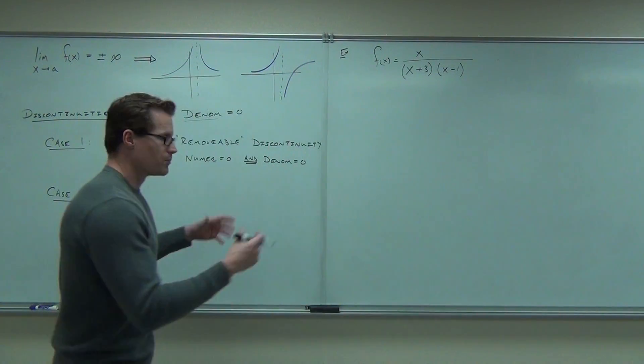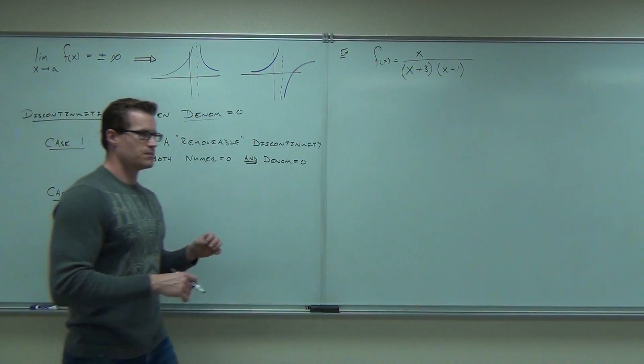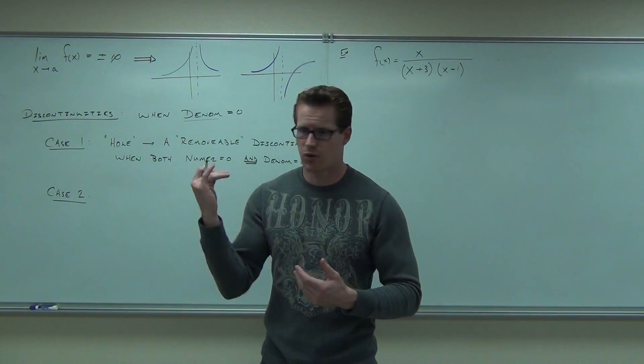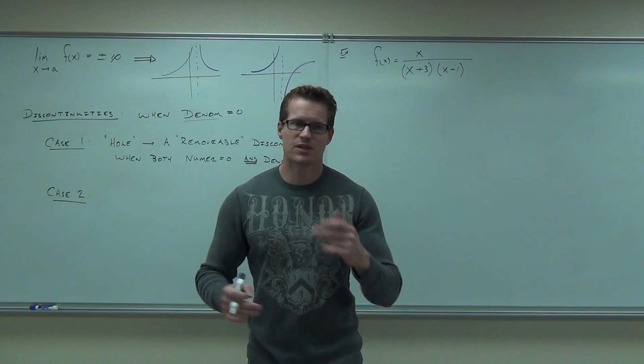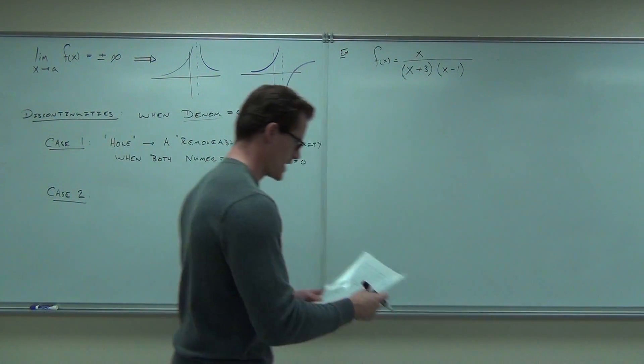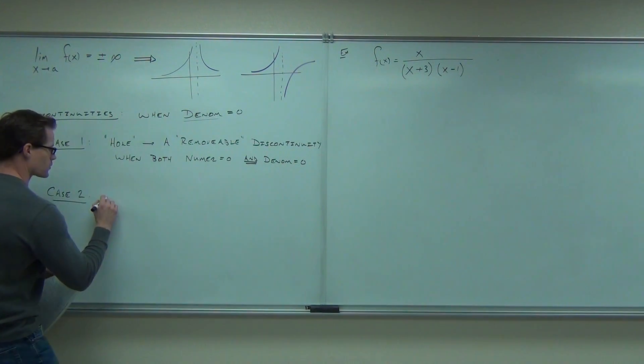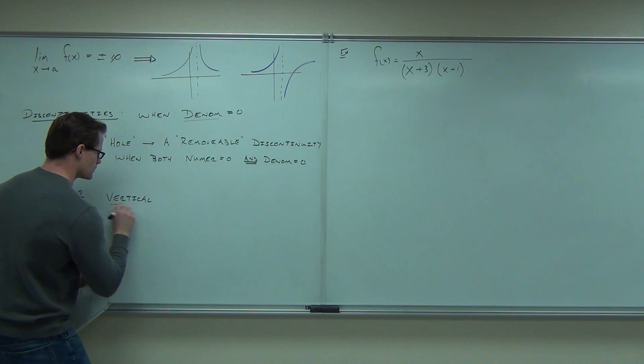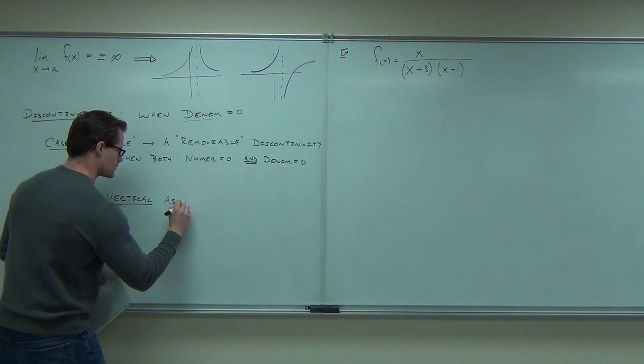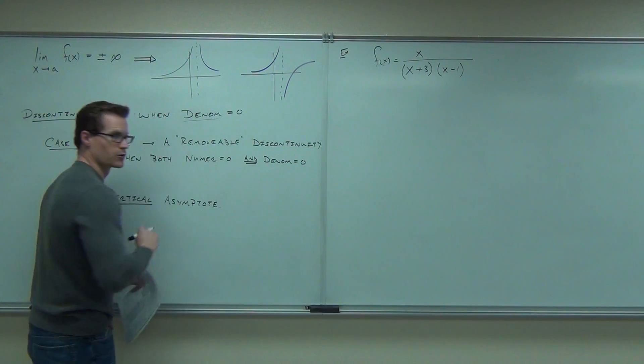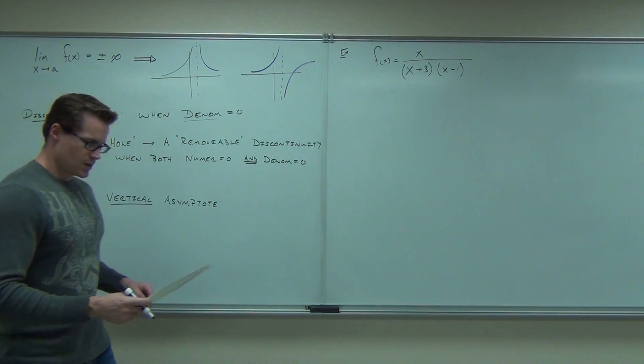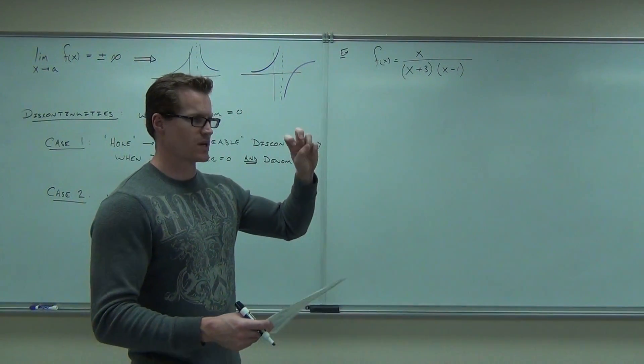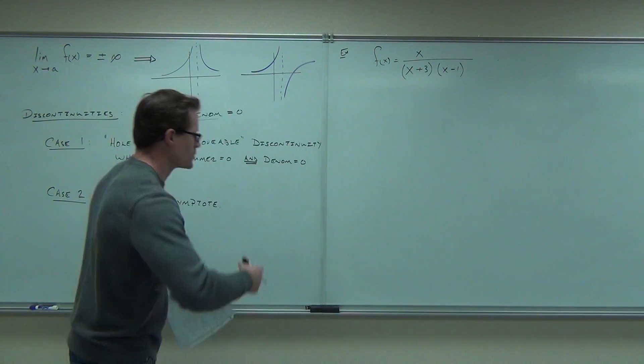Now, or a hole. If we don't have that, if the numerator equals a number and the denominator equals zero, and you cannot cross it out and you can't simplify it, it's not removable. That means we have an asymptote. So, case two is where we had the asymptote, a vertical asymptote. This is when you can't cancel out, and I know you love to use that word cancel out, right? Where you can't cancel out the discontinuity, or you can't remove it.